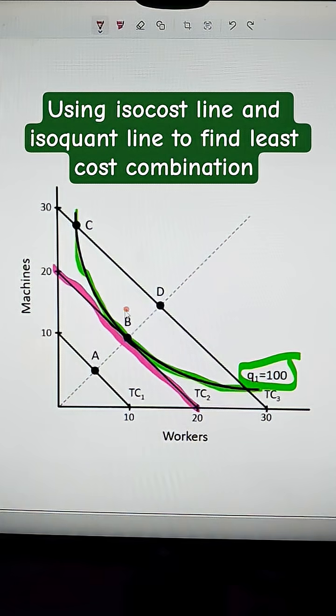So it's right at B, and the slope of that isoquant line is going to be equal to the isocost line.